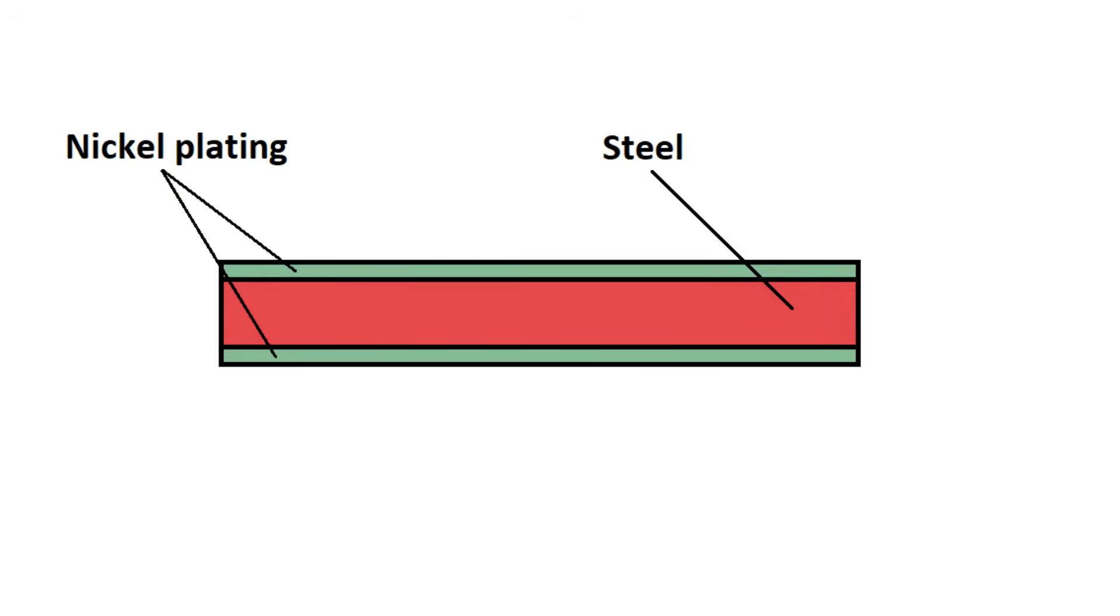Here is a diagram of a nickel-coated strip: we have a thin outer layer of nickel and then steel on the inside. We want to scratch that nickel to expose the steel to corrosion for detection.